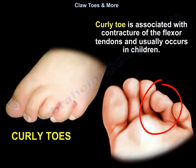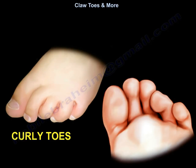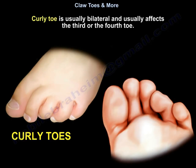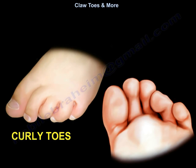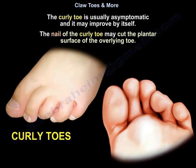The curly toe is associated with contracture of the flexor tendons and usually occurs in children. It is usually bilateral and typically affects the third or fourth toe. The curly toe is usually flexed and curved medially, so that the toe lies underneath the neighboring medial toe. The curly toe is usually asymptomatic and may improve by itself. The nail of the curly toe may cut the plantar surface of the overlying toe.